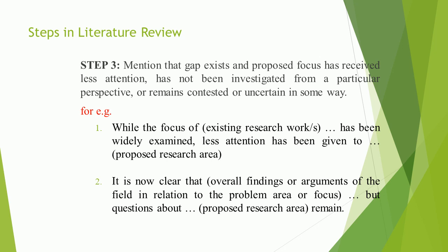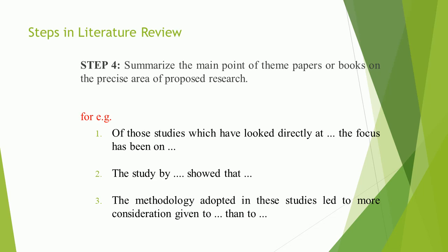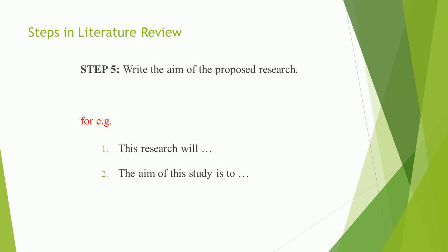Step 3: Mention that a gap exists — the proposed focus has received less attention, has not been investigated from a particular perspective, or remains contested. For example: 'While [existing research] has been widely examined, less attention has been given to [proposed research area]', 'It is now clear that [overall findings], but questions about [proposed research area] remain.' Step 4: Summarize the main point of theme papers on the precise area of proposed research. For example: 'Of those studies which have looked directly at [topic], the focus has been on...', 'The methodology adopted in these studies led to more consideration given to [X] than to [Y].' Step 5: Write the aim of the proposed research. For example: 'This research will...', 'The aim of this study is to...'